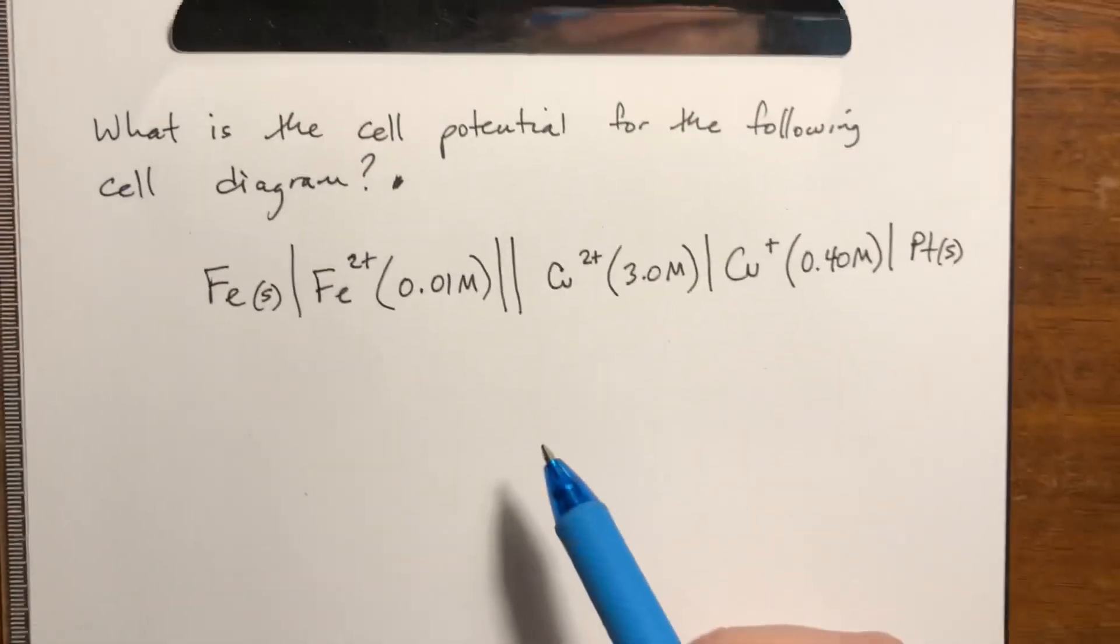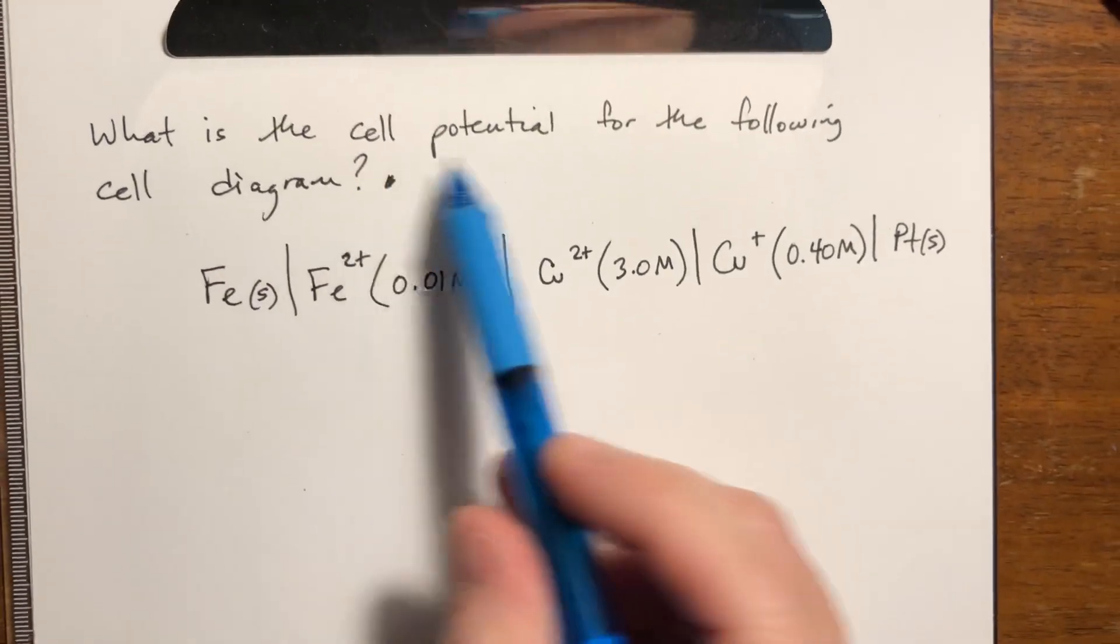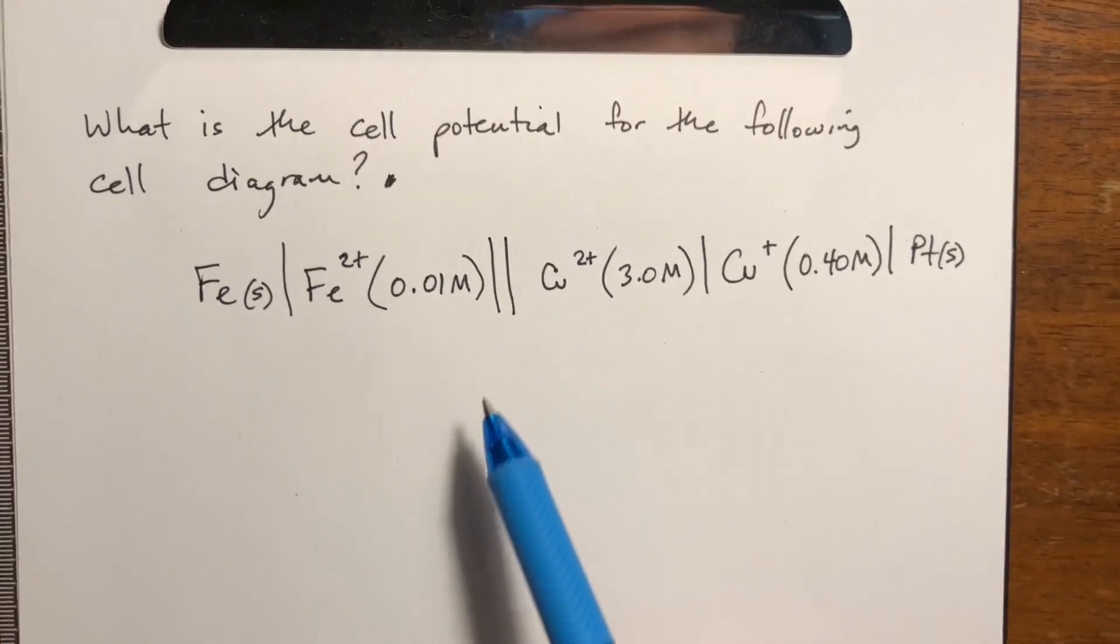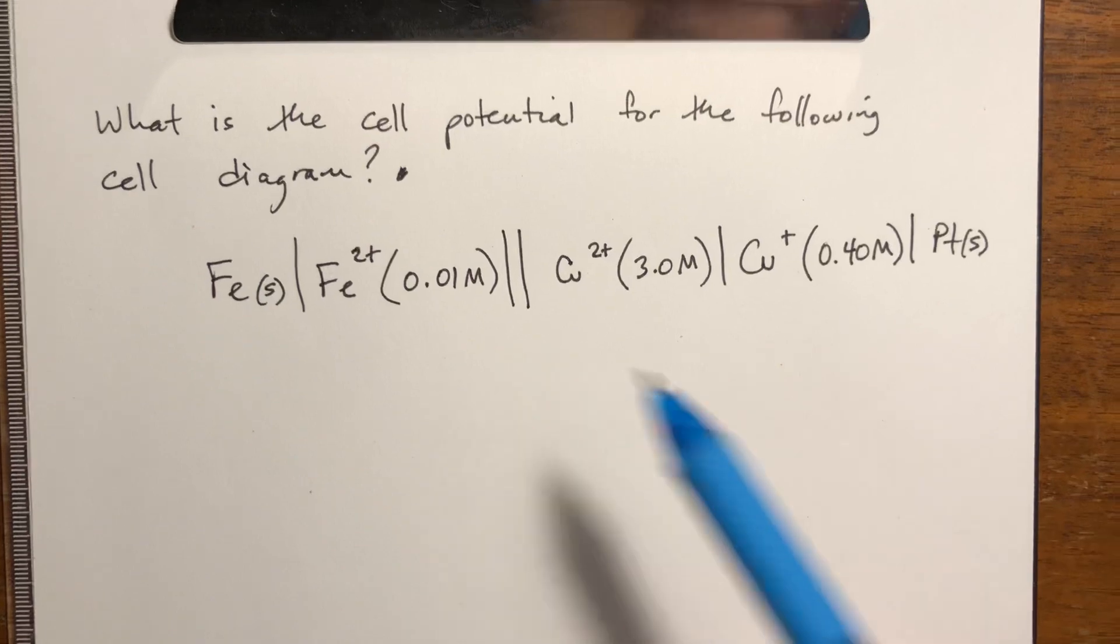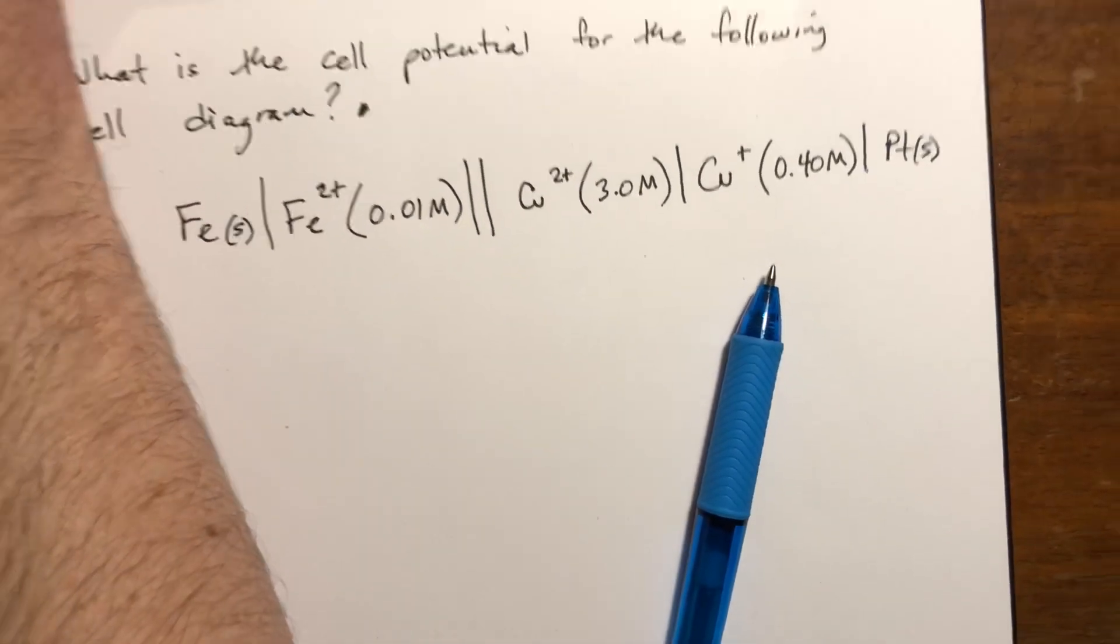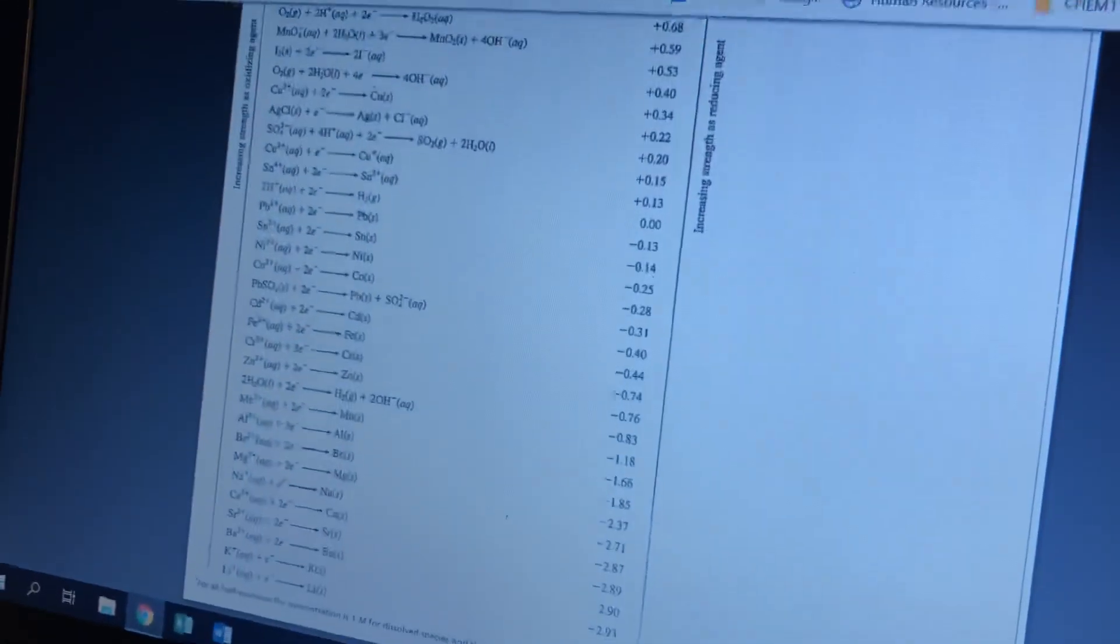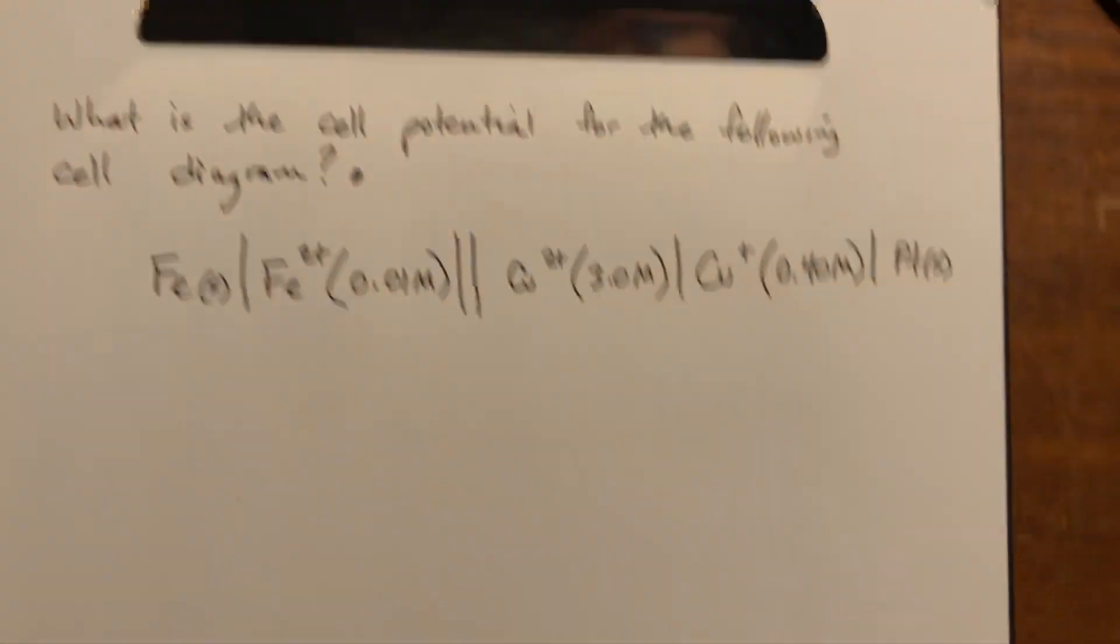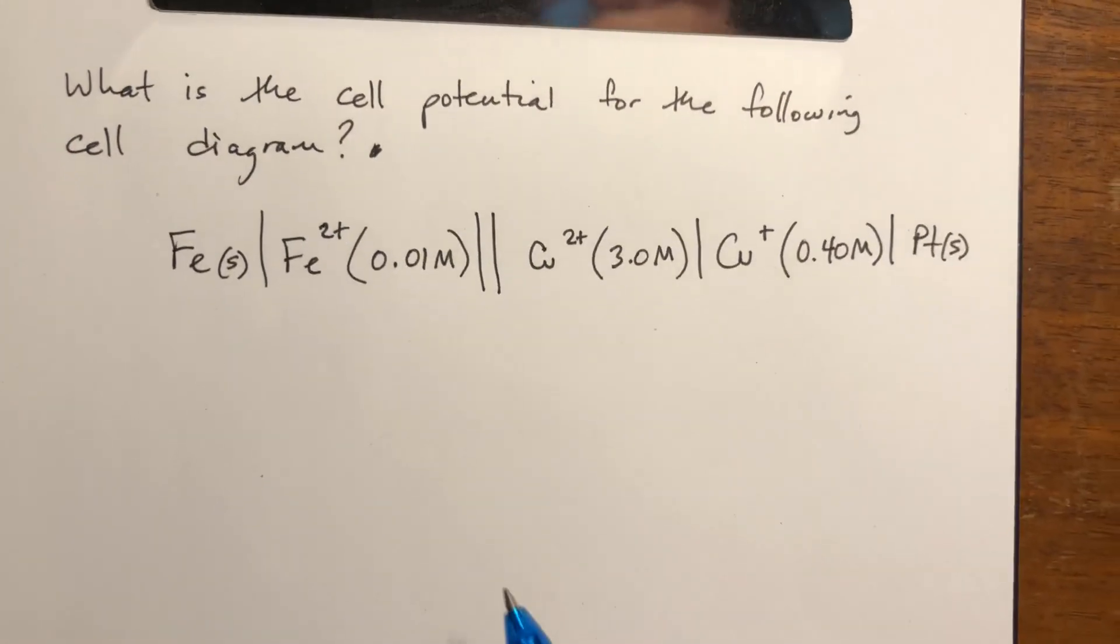Okay, for the previous examples we had been calculating the cell potential of everything at standard conditions, which means that all the concentrations are at 1 molar or all the pressures are at 1 atmosphere, and we used the reduction potential table, which assumes that everything is at standard conditions. Now we need to know what happens if they're not at standard conditions.